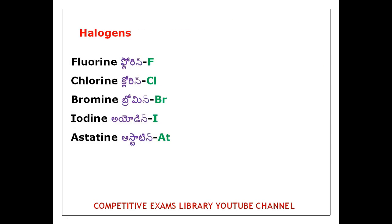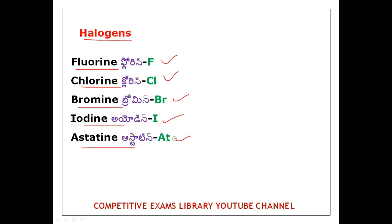Next, Halogens are: Fluorine (F), Chlorine (Cl), Bromine (Br), Iodine (I), Astatine (At). This is Group 17. Halogens are easy to remember.